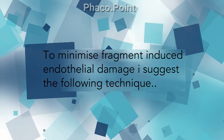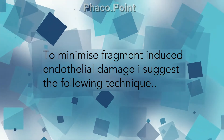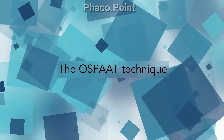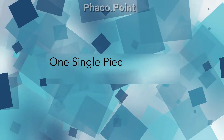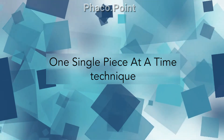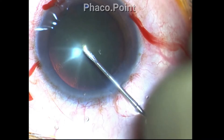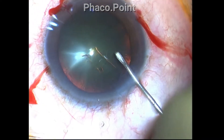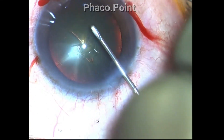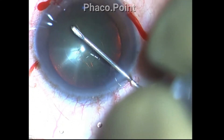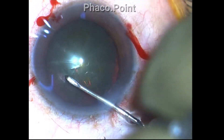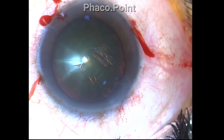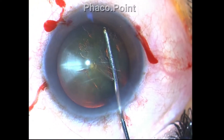To minimize fragment-induced endothelial damage, I suggest the following technique — I call it the OR SPOUT technique, which is an acronym for 'one single piece at a time.' At the outset, do not aim for a large capsulorrhexis; keep it around 5 to 5.25 millimeters, even if you have a quite hard cataract like in this case — a grade 3 nuclear sclerotic cataract.